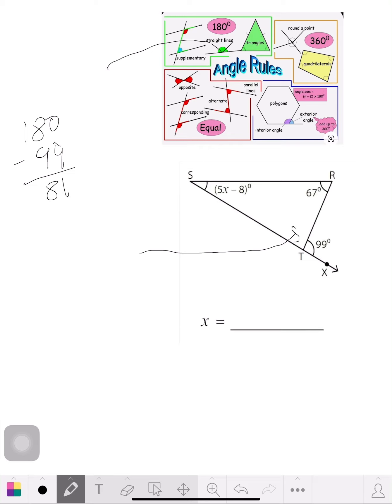So 81 degrees is inside this. Now we know the whole triangle inside. The triangle rules, that's 180 degrees too. So both of these are 180.